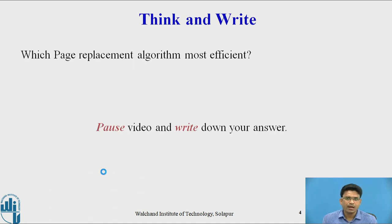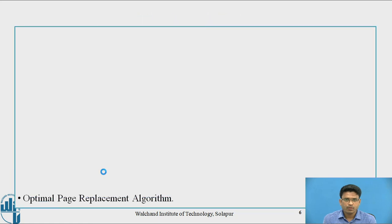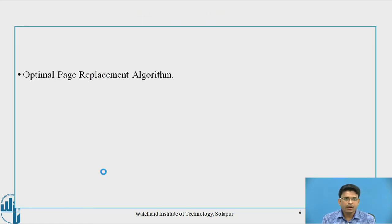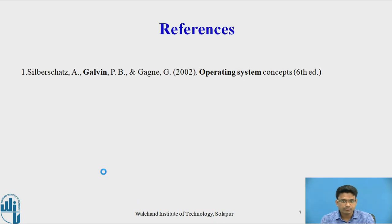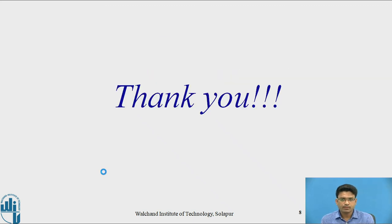Which page replacement algorithm is the most efficient? We have seen three algorithms. The answer is the Optimal Page Replacement algorithm, because the number of page faults we are getting is very less in the optimal. The reference used is Galvin's Operating System Concepts. Thank you.